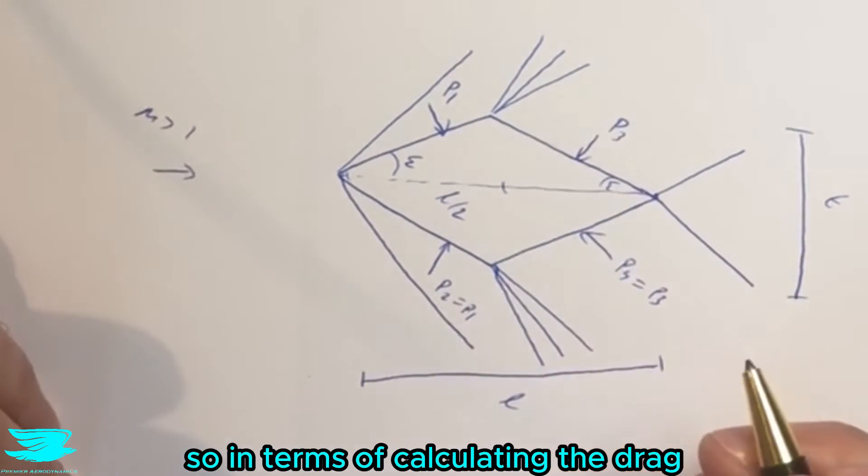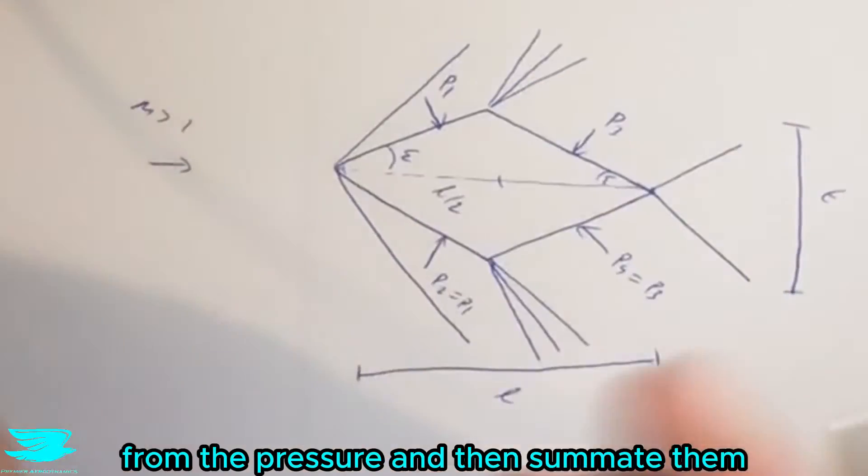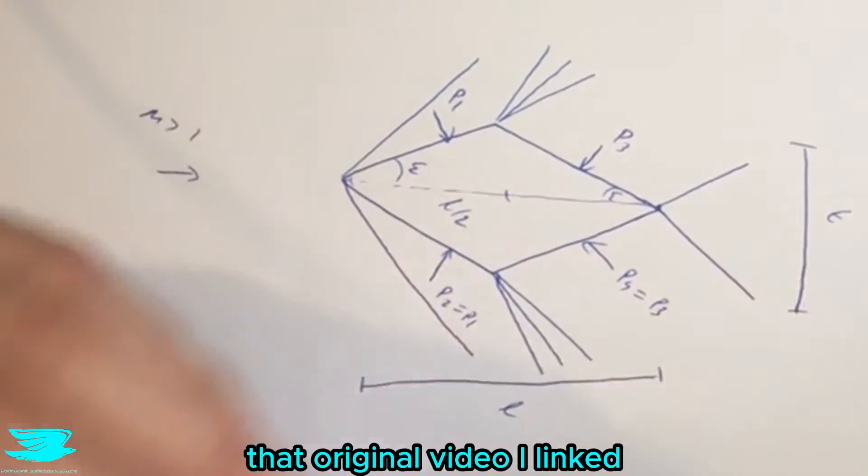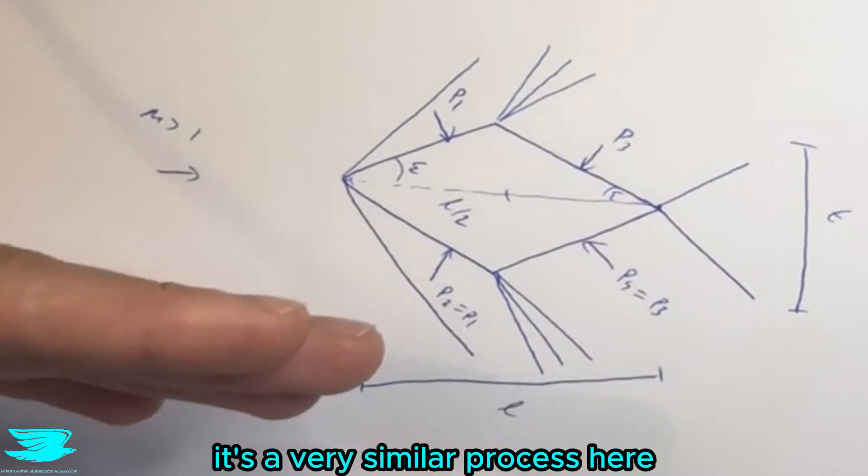So in terms of calculating the drag, what we need to do is figure out what the drag on each face is from the pressure, and then summate them. So in air fundamentals number 45, that original video I linked at the start of the video, we go through how to do this for a regular airfoil. And it's a very similar process here.